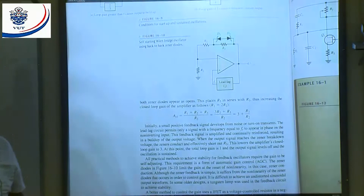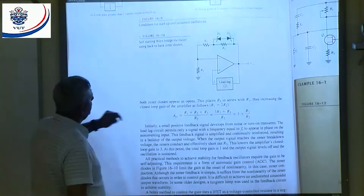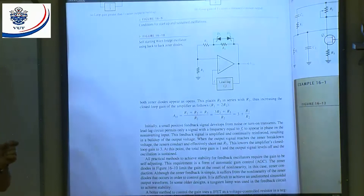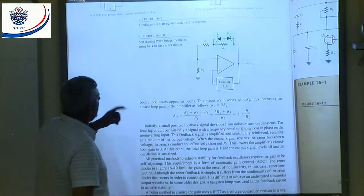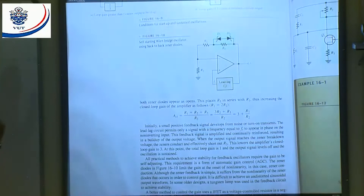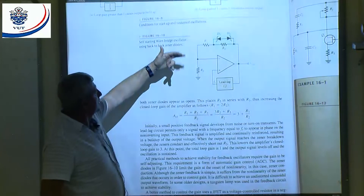To summarize: when we start off, the zener diodes look like open circuits. The gain is determined by R1 plus R3 divided by R2 plus one — gain larger than one for starting up. When oscillations begin and voltage is large enough, one zener is forward biased and the other reverse biased, shorting out R3. Now the gain is determined by R1 divided by R2 plus one, equal to a closed-loop gain of one.